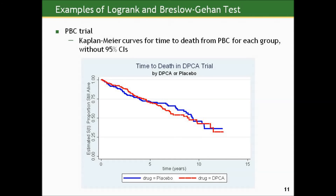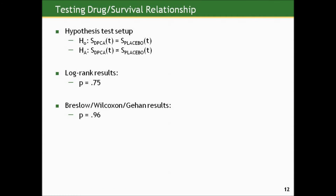If we put this into a hypothesis testing framework, the null hypothesis would be that the drug and placebo groups have the same time-to-death experience at the population level — i.e., if we were to give every patient with primary biliary cirrhosis one or the other, what would happen? The alternative is that they're different. Looking at the log-rank results, the p-value is 0.75, and the Breslow-Wilcoxon-Gehan is much larger at 0.96.